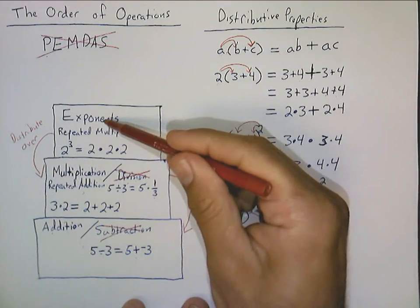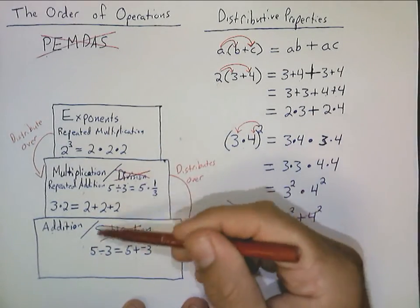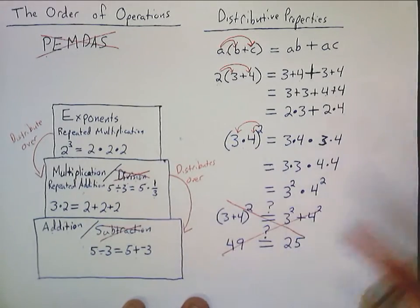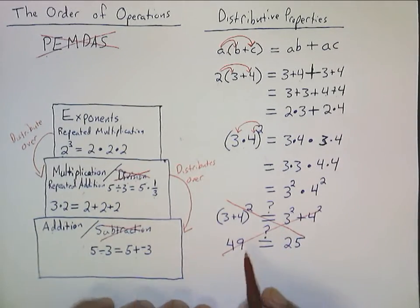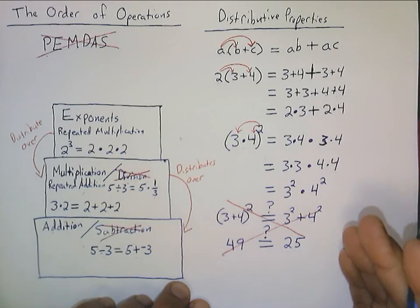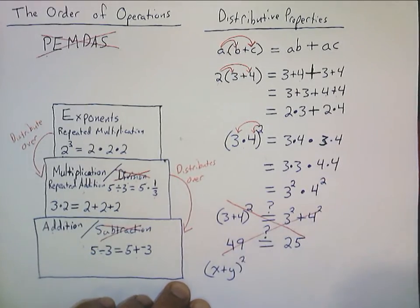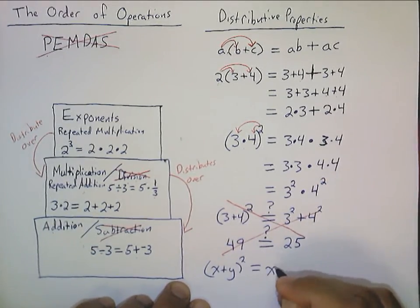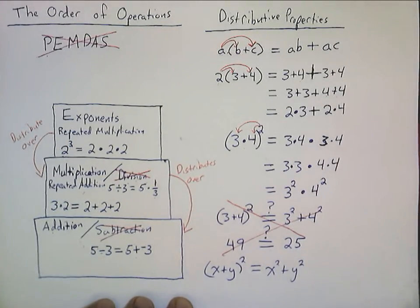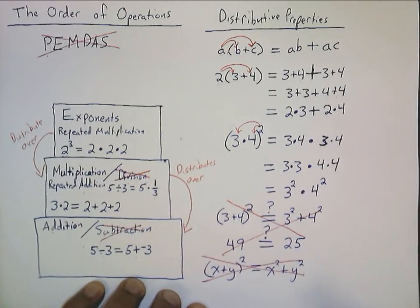And, the reason being that exponents are two steps above addition. You only distribute one step down. Multiplication over addition, and exponents over multiplication. But, the unfortunate part is, every single year, I see students trying to do this. Because, once we get to variables, it's going to be really tempting to just say, oh, sure. If I have x plus y squared, somebody's going to try to tell me that that is x squared plus y squared. And, that is absolutely not true, as we saw right up here. Three plus four squared is not three squared plus four squared. Doesn't work that way. So, please, please, please, don't try to do that. We'll talk more about how to deal with this in a little bit.